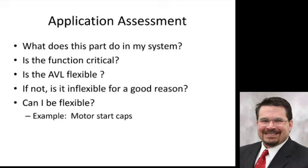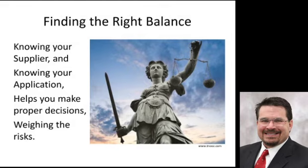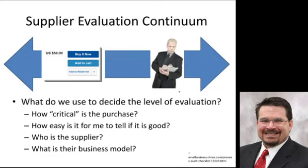That flexibility comes into play as something we have to think about as a producing entity. When I combine knowledge of my supplier's capabilities and processes with knowledge of my application, I can make a much better decision weighing those two risks together. So if we look at evaluating suppliers, how do I make a continuum? I can go from buying something off eBay — no idea who the seller is — all the way to a supplier I've audited multiple times over 20 years. We have to ask: what do we use to decide how much time to spend, and how easy is it to tell if a component is good or not?